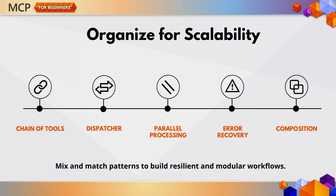When designing tools, lean on established patterns. Chain of tools: one tool feeds into the next. Dispatcher: routes requests to specialized tools. Parallel processing: run multiple tools at once for speed. Error recovery: try fallback tools if the primary fails. Composition: combine smaller workflows into larger ones. These patterns increase flexibility and help you build workflows that scale and recover gracefully.